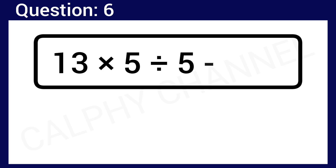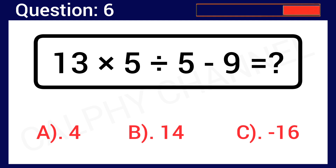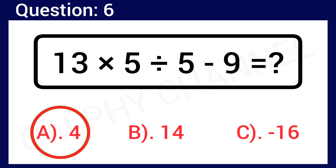Question number 6: 13 times 5 divided by 5 minus 9 is worth what? The correct answer is Option A, which is 4.